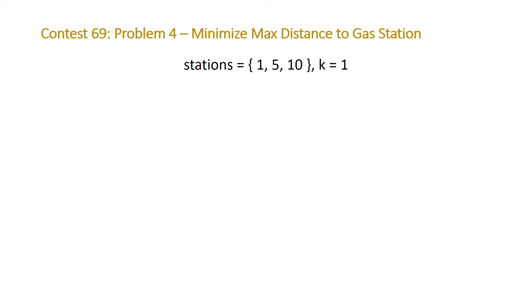So let's take a look at our example here. We have stations at positions 1, 5, and 10, and k is equal to 1. So we need to add one gas station. The visualization of this is as follows: here is our horizontal number line, and our goal is to minimize the distance between these gas stations. Currently, the distance between the gas stations are 4 between the first and second, and 5 between the second and third.